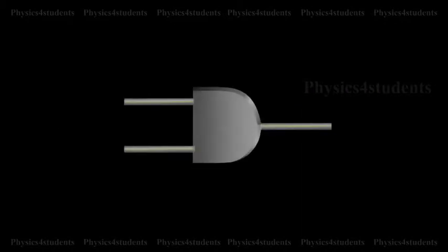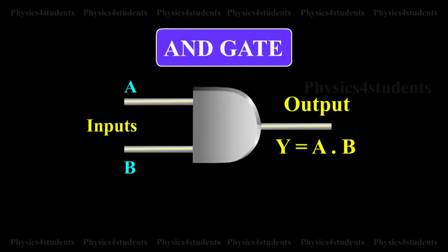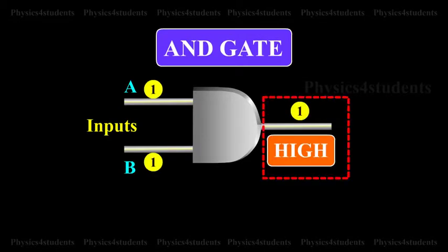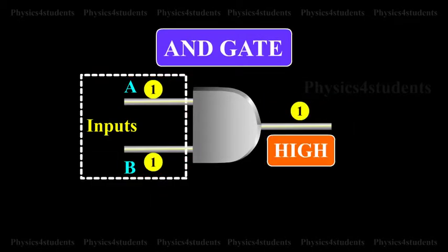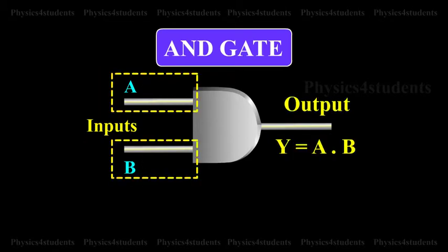An AND gate has two or more inputs but only one output. It is also known as AND gate because the output is high only when all the inputs are high. The logic symbols of a two input AND gate is shown in the animation.